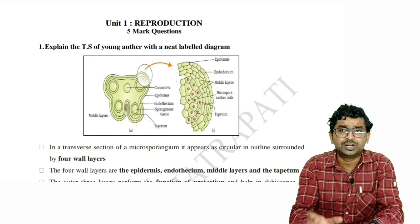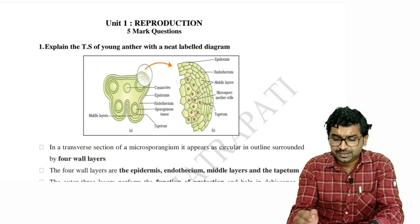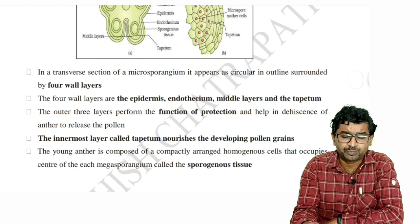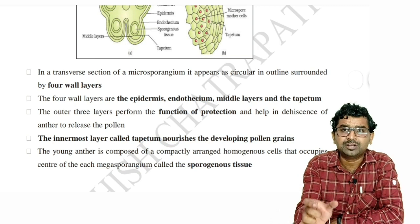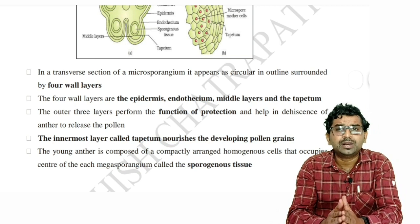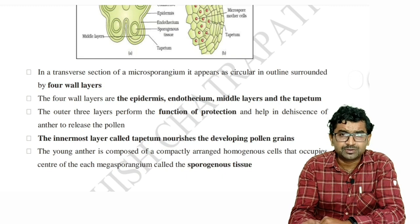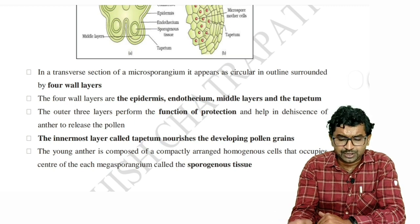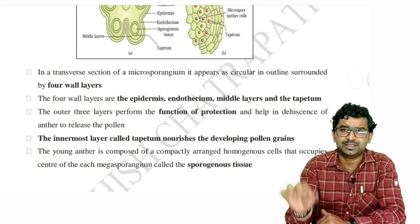This is the complete diagram with labeling. Write the labeling correctly. Then, from the description — some of the important points, you can see on the screen. I have represented four to five points here, along with some important terminologies and technical words. Write them correctly, without making any spelling mistakes. The transverse section of young anther consists of four wall layers: epidermis, endothecium, middle layers, and tapetum. This is the first part — highlight it, underline it.